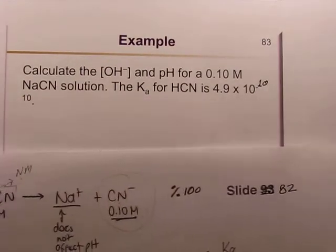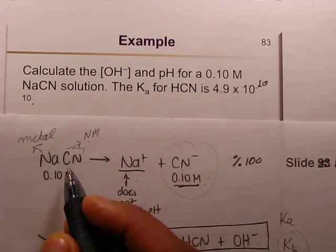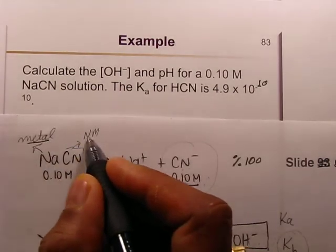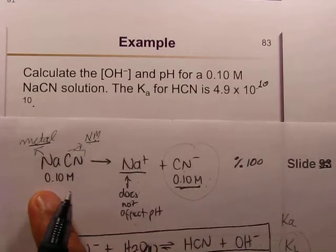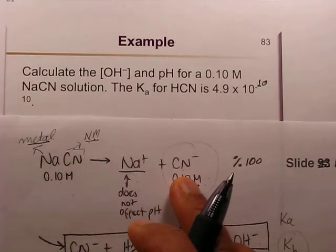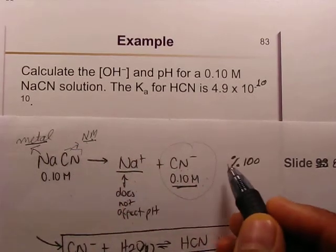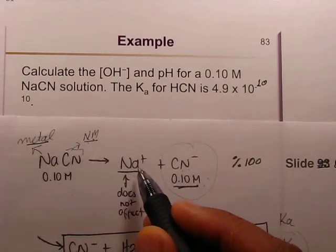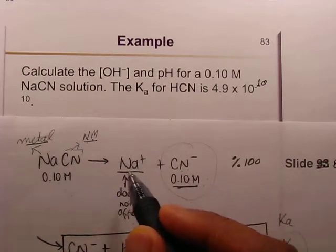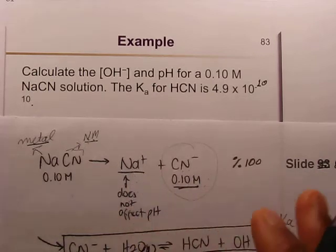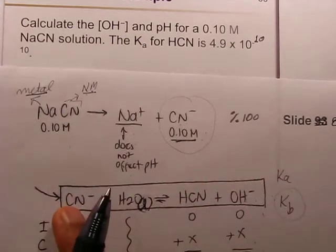Sodium cyanide is a salt — it is a metal and non-metal compound. When dissociated, it forms sodium ion and cyanide ion. This salt dissociates 100 percent. Sodium ion does not react with water, but cyanide ion does react with water because sodium ion comes from a strong base.